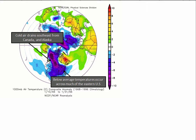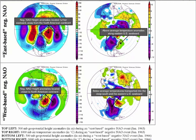This type of pattern is also typically associated with what's called a negative Arctic Oscillation, because you have above normal heights towards the Arctic and below normal heights towards the mid-latitudes. But position matters. This is an illustration from the University of North Carolina of an east-base and a west-base negative NAO.